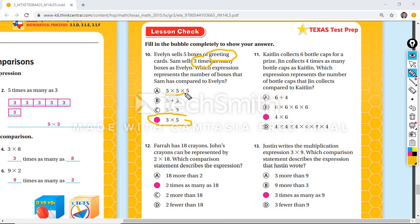Caitlyn collects six bottle caps for a prize. Jin collects four times as many bottle caps than Caitlyn, which is four times as many as Caitlyn. Excuse me.